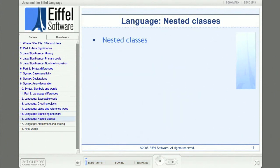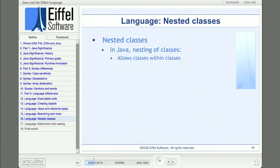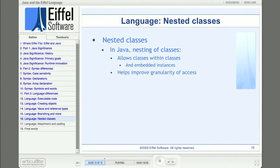Let me talk just a minute about nested classes. In Java, you can create a class inside of another class. A nested class has unlimited access to all its enclosing class's members, regardless of access modifiers. This is in keeping with Java policy because a nested class is internal to the enclosing class, just like a class's routines, so it has full access. If a nested class has an instance, that instance is embedded in the instance of the enclosing class.